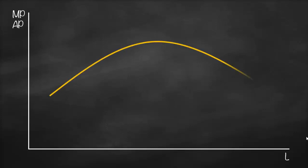This video is about the relationship between average product and marginal product. The x-axis represents labor and the y-axis represents marginal product or average product. When we draw our average product, it will be inverse U-shaped, with a maximum point.